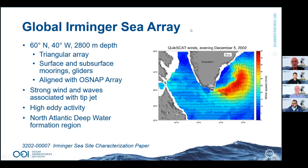The Irminger Sea is different in character, associated with very strong intermittent winds due to the so-called tip jet — winds up to 40 meters per second shown in red in the satellite wind imagery — impacting the OOI array. It's at about 2,800 meters depth and is also a triangular array, with surface moorings, subsurface moorings, and gliders all supplied by OOI. We're also collaborating with the OSNAP program — Overturning in the Subpolar North Atlantic — given the site's importance for North Atlantic deep water formation.